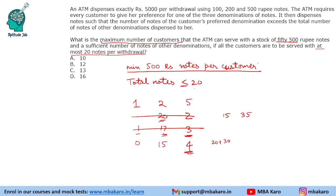So per customer you give 4 notes of ₹500, and there are 50 notes of ₹500 in stock. Therefore 50 divided by 4 gives 12 — we can serve 12 customers. We cannot serve beyond that.